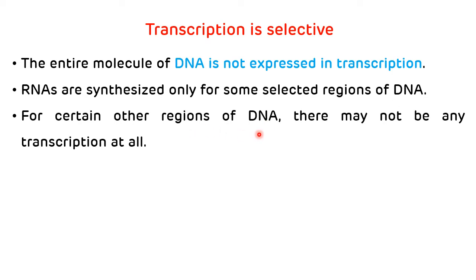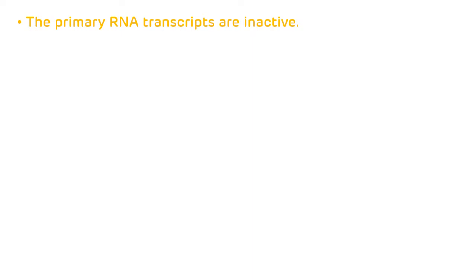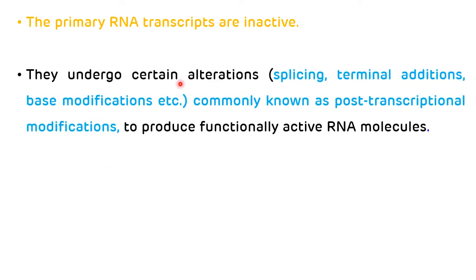For certain other regions of DNA, there may not be any transcription at all. The product synthesized at the end of transcription is called a primary transcript. A primary transcript is present in the inactive form and undergoes certain alterations — commonly known as post-transcriptional modifications — which involve splicing, terminal additions, and base modifications to produce functionally active RNA molecules.